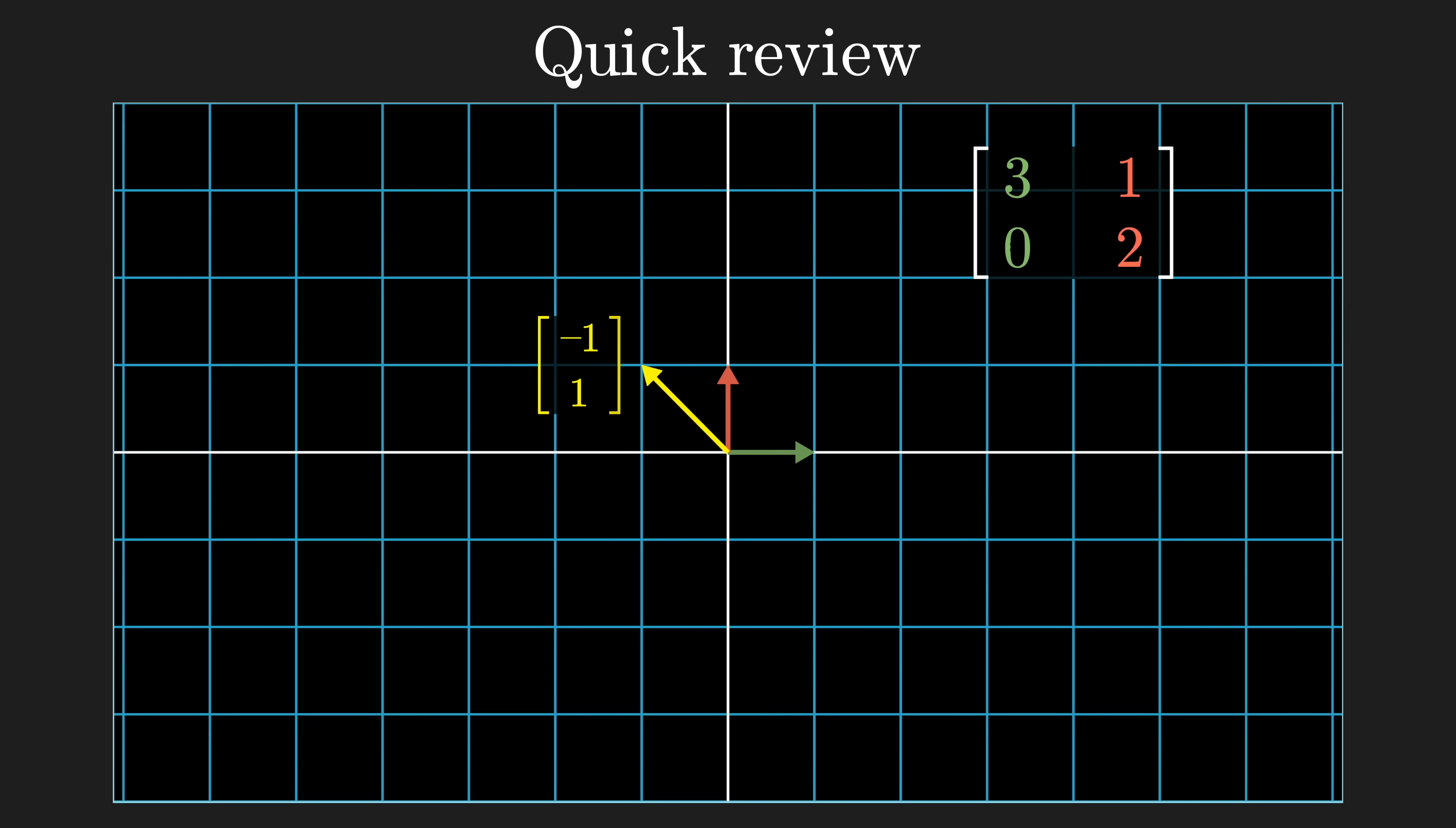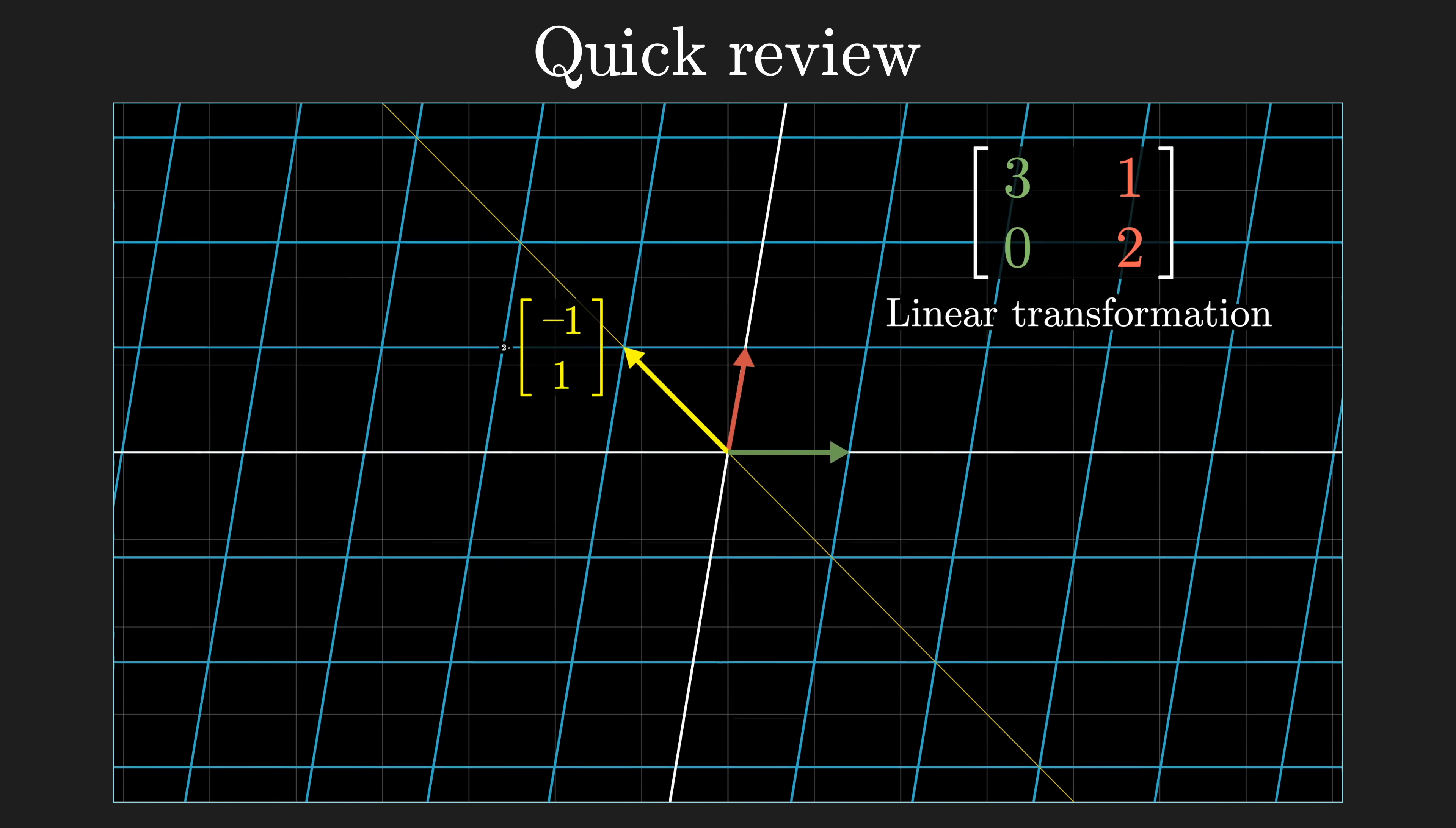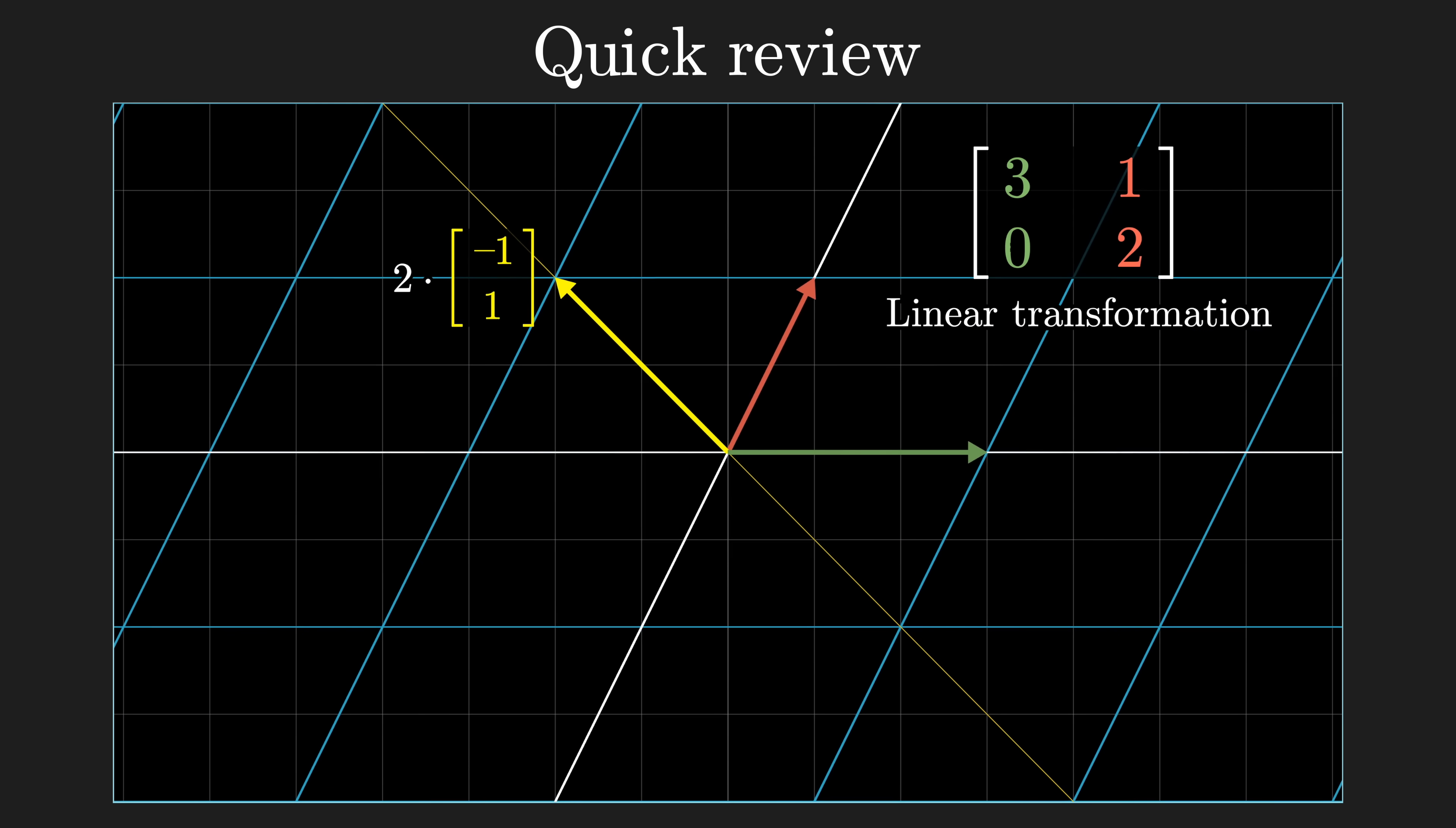As a quick reminder, if the effect of a linear transformation on a given vector is to scale that vector by some constant, we call it an eigenvector of the transformation and we call the relevant scaling factor the corresponding eigenvalue, often denoted with the letter lambda.